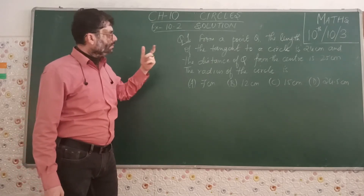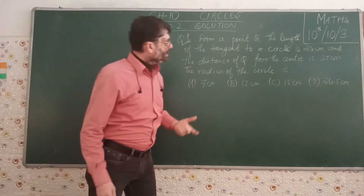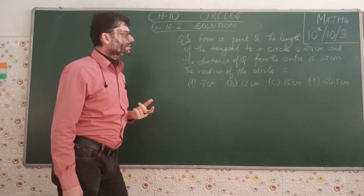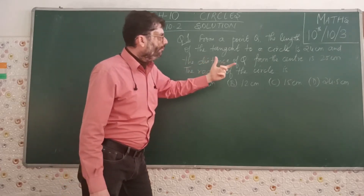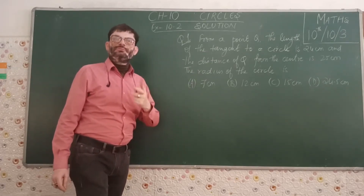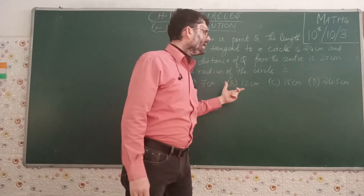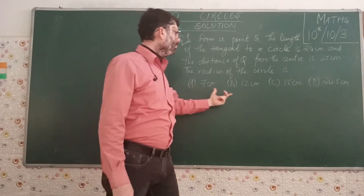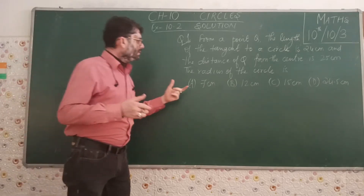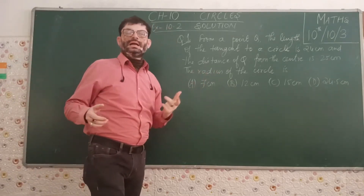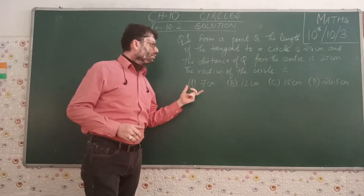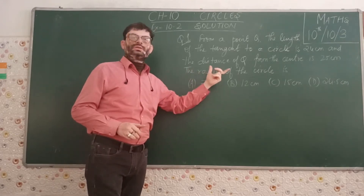Let us start from question number 1. From a point Q, the length of the tangent to a circle is 24 cm and the distance of Q from the center is 25 cm. Then what is the radius of the circle? In MCQ based questions, we have to solve the question and get the exact answer, only then we can determine the radius of the circle.